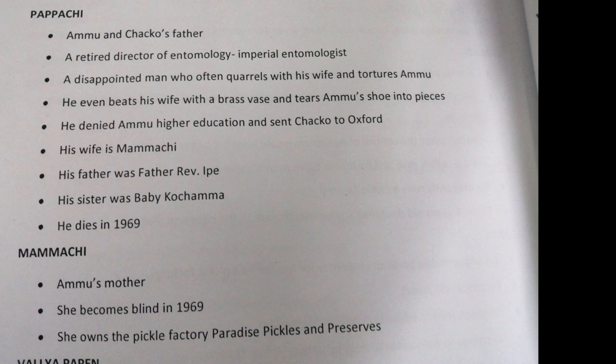Next character: Papachi — Ammu and Chacko's father, a retired director of entomology, imperial entomologist. A disappointed man who often quarrels with his wife and tortures Ammu. He beats his wife with a brass weight and tears Ammu's shoe to pieces. He denied Ammu higher education and sent Chacko to Oxford, showing the patriarchal perspective on women. His wife is Mamachi, his sister was Baby Kochamma. He dies in 1969.